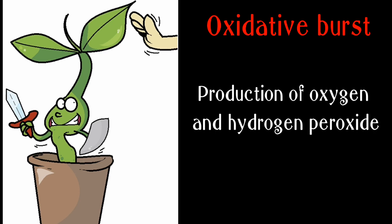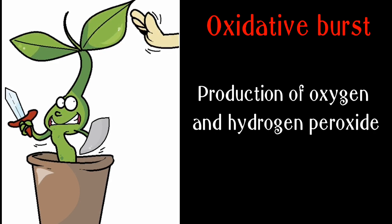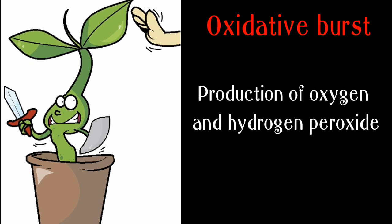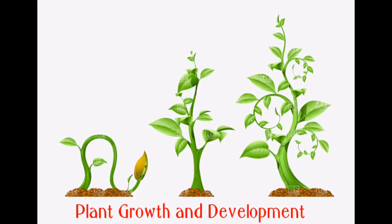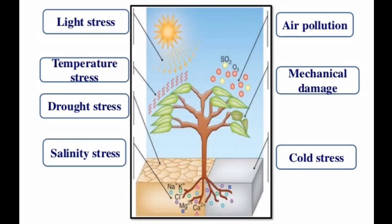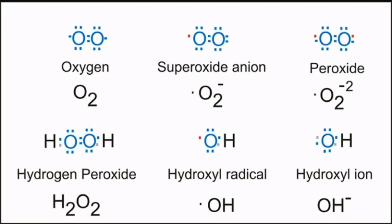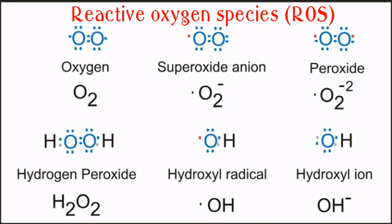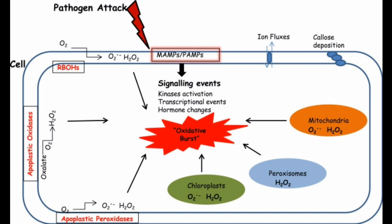Oxidative burst is the production of oxygen and hydrogen peroxide, which are known to be involved in plant defense mechanisms as well as in plant growth and development processes and response to abiotic stress. Plant cells produce harmful reactive oxygen species such as hydrogen peroxide, singlet oxygen, the superoxide anion, and the hydroxyl radical as byproducts of their normal metabolism. Reactive oxygen species generation during oxidative burst is associated with pathogen recognition related to the perception of pathogen-associated molecular patterns.